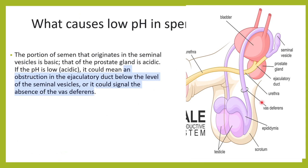Low semen pH can be caused by obstruction in the ejaculatory duct below the level of the seminal vesicles, or it could signal absence of the vas deferens. When semen pH is low, meaning more acidic, it is because the basic component is reduced — that is, the seminal vesicle fluid is less.